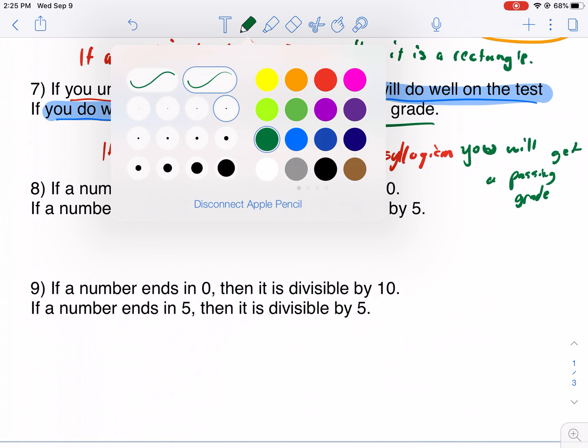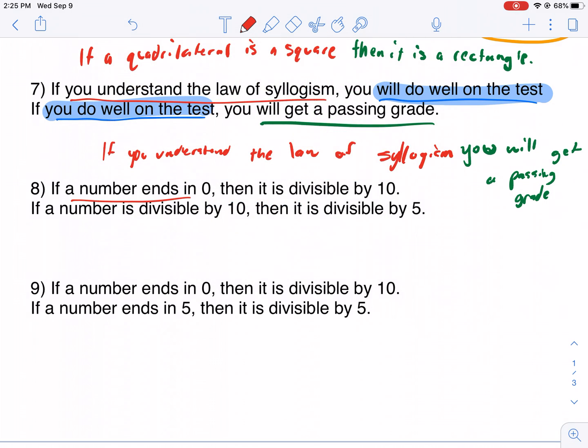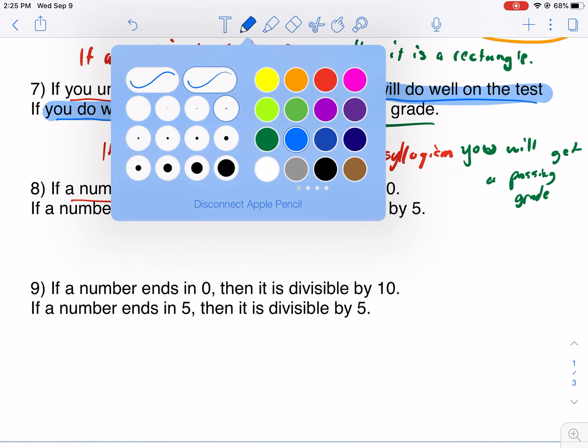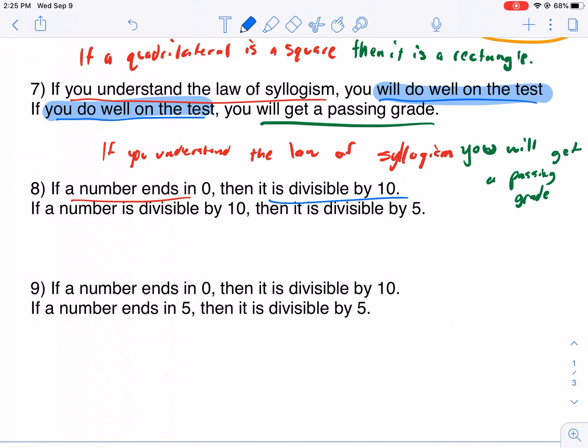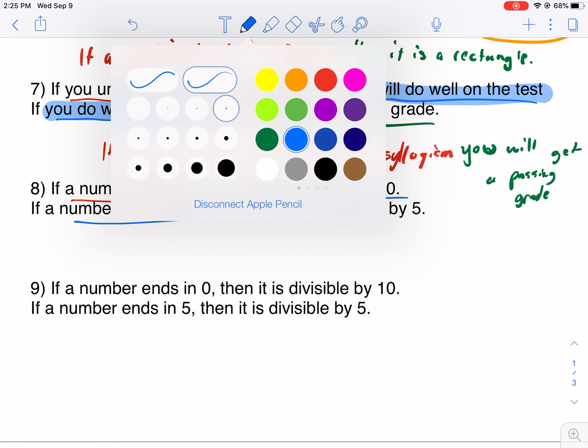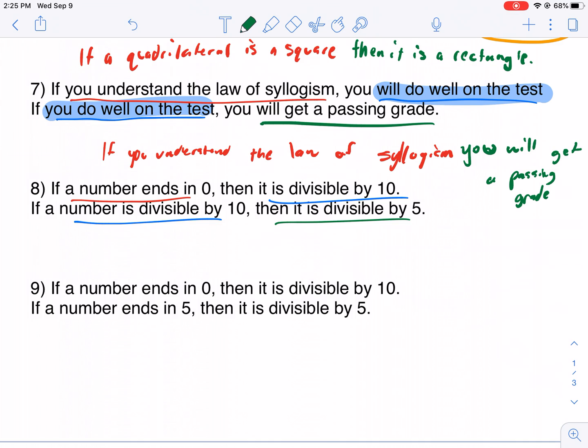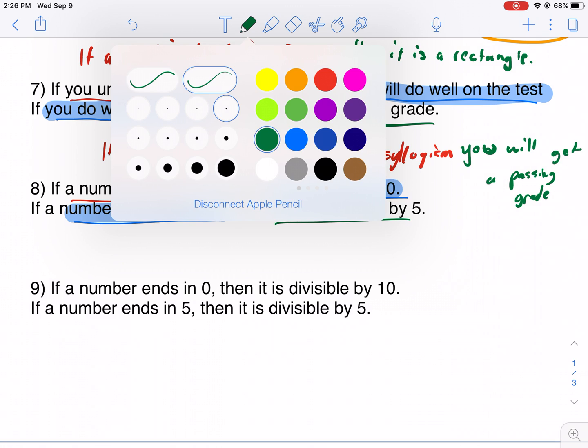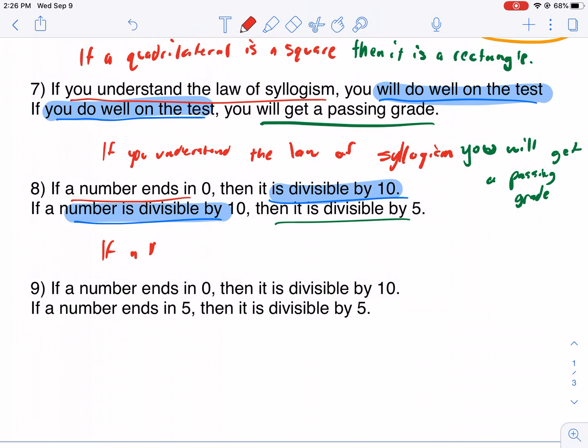Next one. Let's see if the pattern continues. A number ends in zero, it is divisible by 10. If it's divisible by 10, then it's divisible by 5. All good here. The conclusion becomes the hypothesis of the next one. So if a number ends in zero, then it's divisible by 5. And that's true.